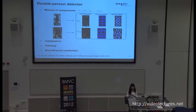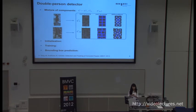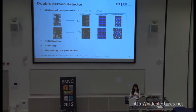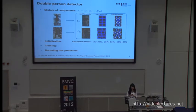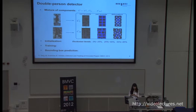In full analogy to DPM, our double-person detector also uses a mixture of components. Each component consists of a root filter, which defines the coarse location of two people, deformable parts which capture different respective parts, and also the occlusion pattern of two people. For initialization, instead of initializing depending on bounding box aspect ratios, we initialize our components by occlusion levels. This follows the intuition that the degree of occlusion is the major source of appearance variability, and we capture it by different components.